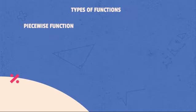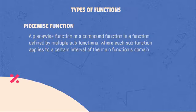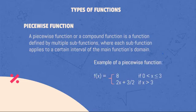Piecewise Function: A piecewise function, or a compound function, is a function defined by multiple sub-functions, where each sub-function applies to a certain interval of the main function's domain. For example, f(x) = 8 if x is greater than 0 and is less than or equal to 3. Also, f(x) = (2x + 3)/2 if x is greater than 3. Let's have some real-life example where piecewise functions can be applied.